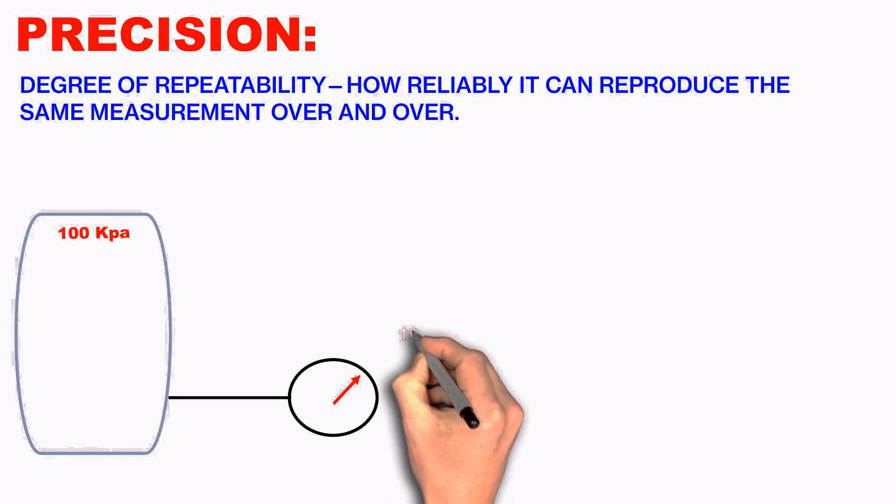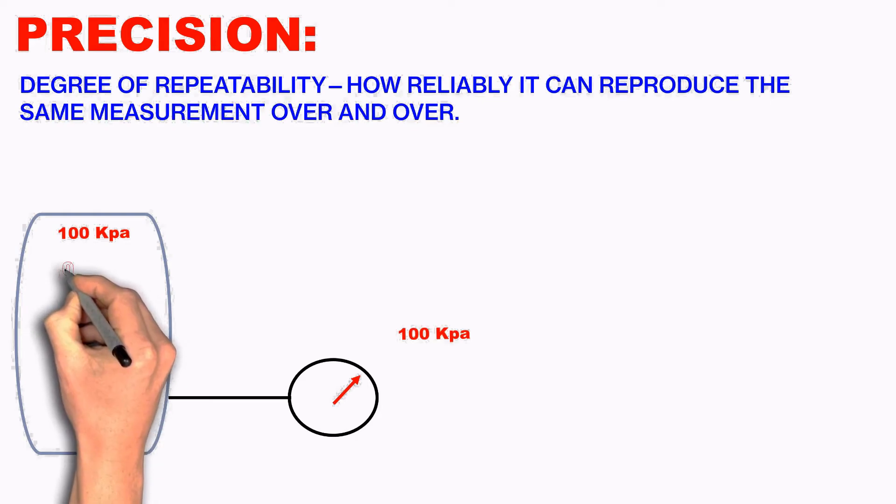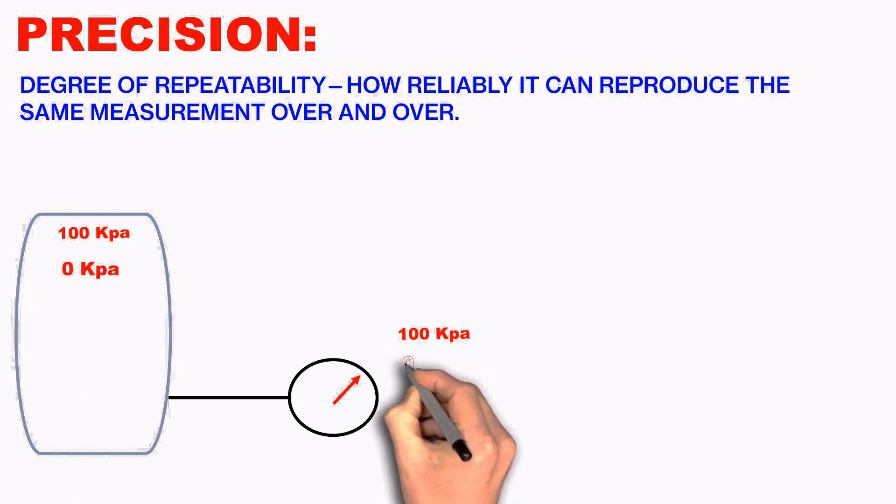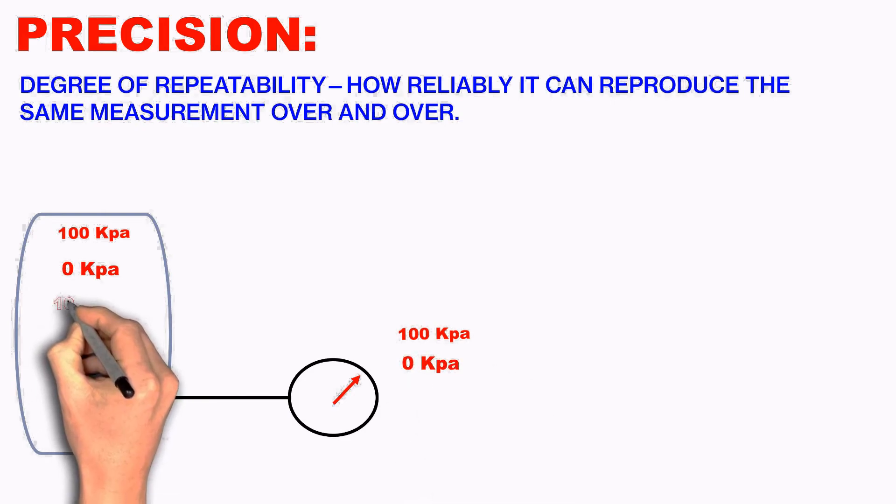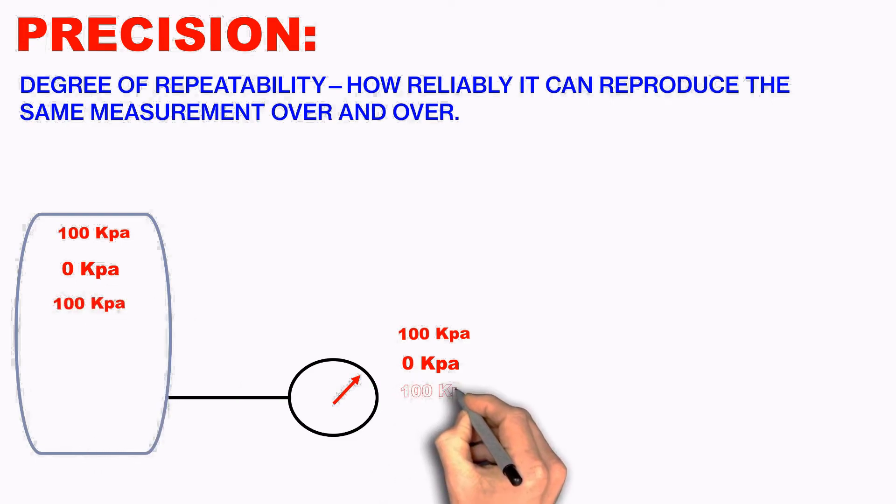Again, I am pressuring the vessel to 100 kPa. Again, the pressure gauge indicates 100 kPa. So similarly, I do n number of times and the pressure gauge is indicating the same 100 kPa, and this is called the precision.